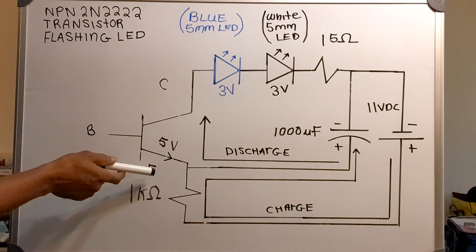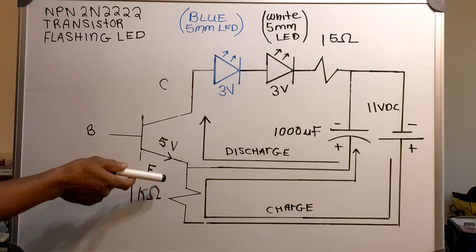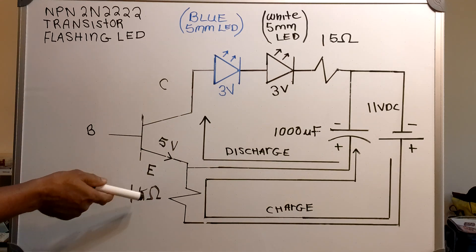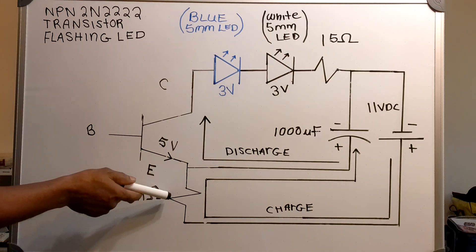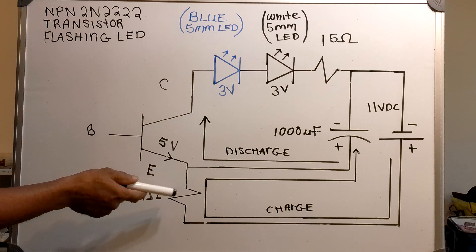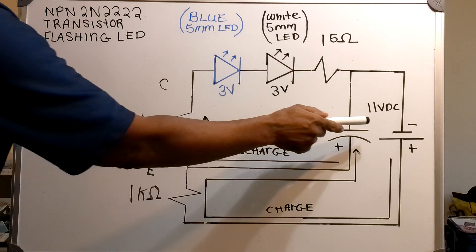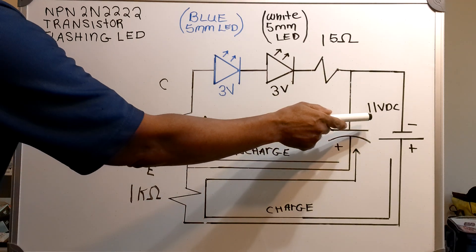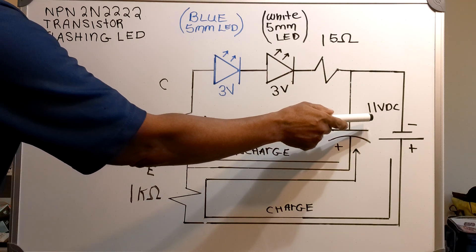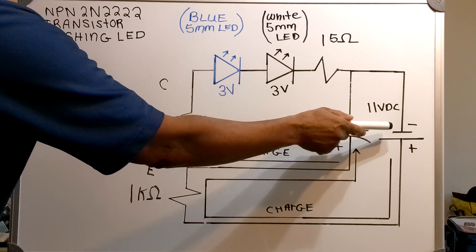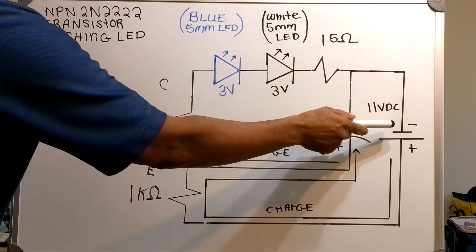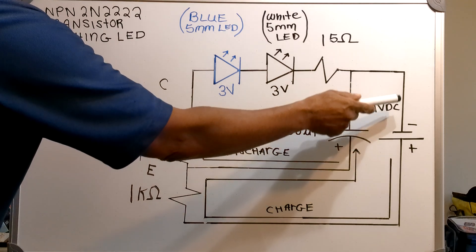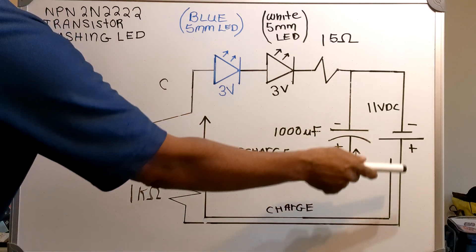On the emitter side I have a 1k ohm resistor. And I have an 11 volt DC source across the entire transistor.